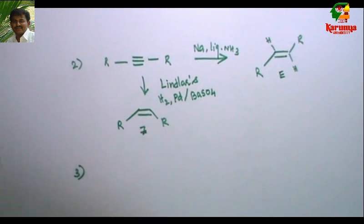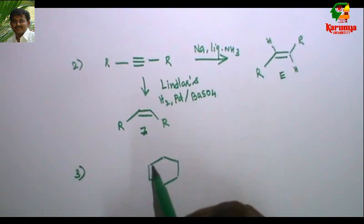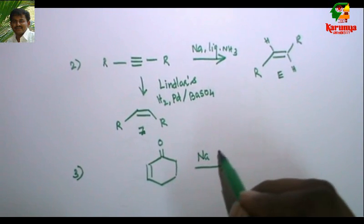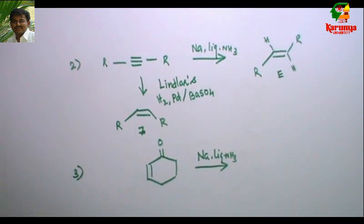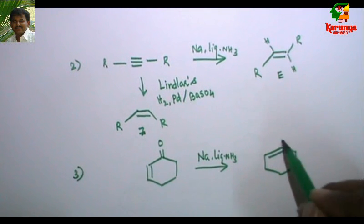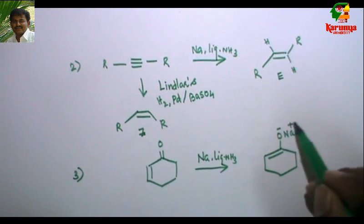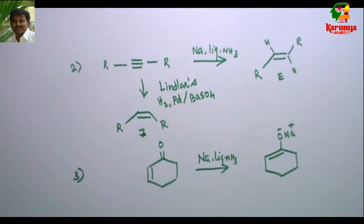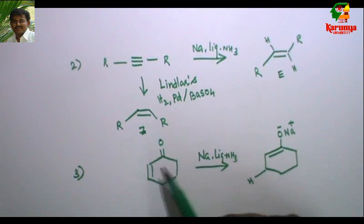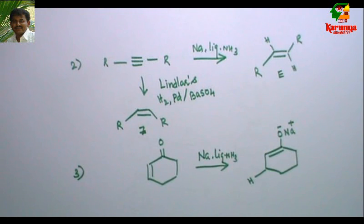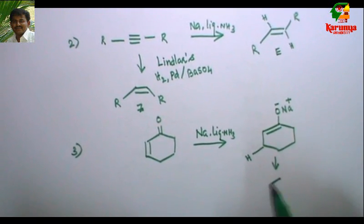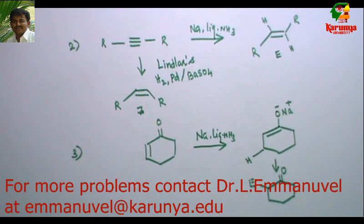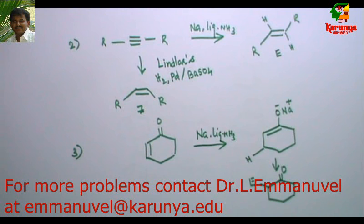The third reaction involves an alpha-beta unsaturated ketone. If you add sodium and liquid ammonia to this system, what you get is a sodium enolate. The mechanism is a single electron transfer mechanism — the mechanism is not critical. A bond forms with hydrogen, and this bond migrates to give the enolate, which can then be added to an electrophile to give the final product.